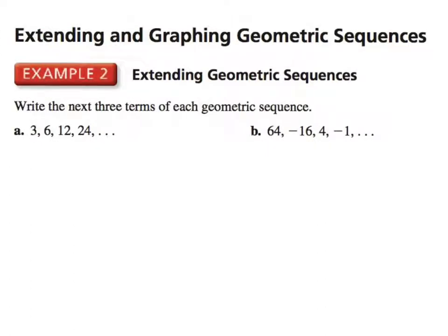The next part is writing the next three terms of the sequence. You can use a table or anything you'd like to figure out the pattern. In part A, we go from 3 to 6, 6 to 12, 12 to 24 — multiplying by 2 each time. So the next three terms would simply be 48, then 96, then 192.